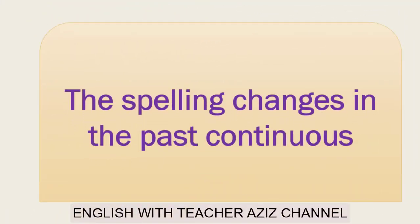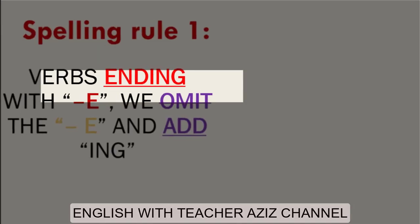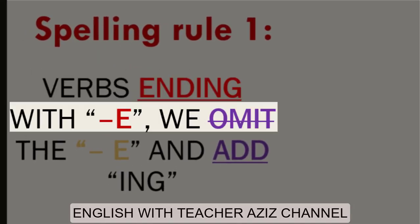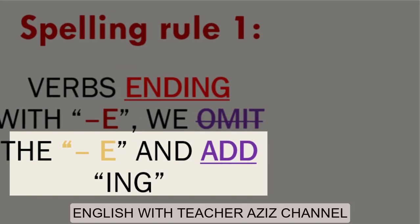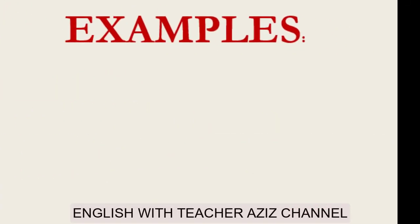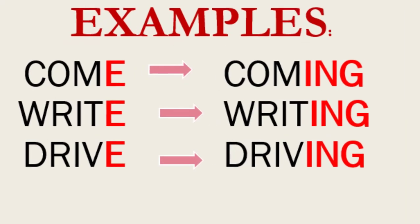The spelling changes in the past continuous. Spelling rule 1: verbs ending with E — we omit the E and add -ing. For example: come → coming, write → writing, drive → driving.